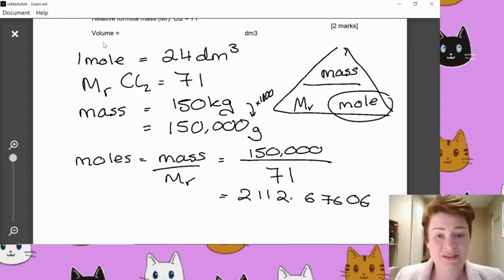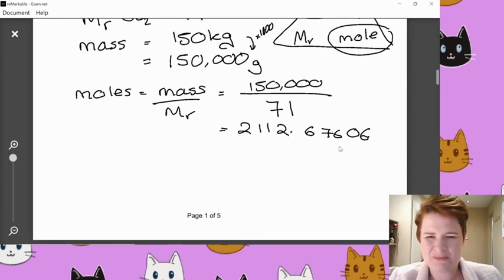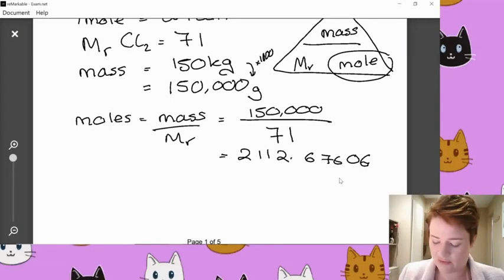Now, this mass is in kilograms. When we are dealing with moles, we do tend to convert first to grams just because it makes it a little bit easier. 150 kilograms is the same as 150,000 grams. You just times by a thousand there. So moles equals mass divided by relative formula mass. The mass was 150,000. Relative formula mass was 71, which is going to equal 2112.67606. That's an awful number to deal with, isn't it?